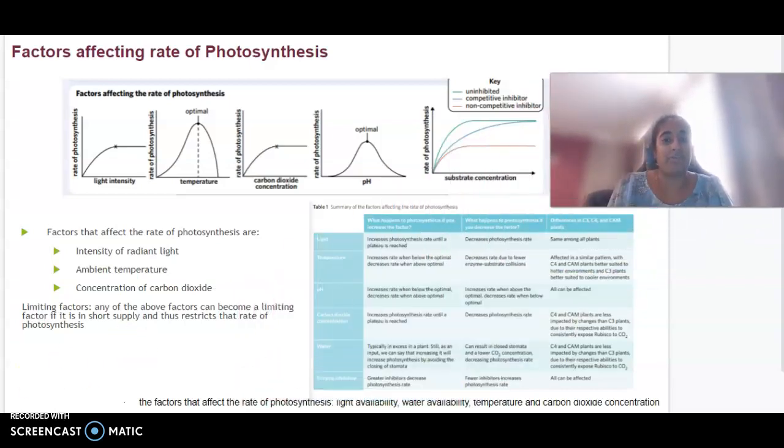Factors that can affect the rate of photosynthesis include light intensity—increasing light increases the rate until a plateau is reached. Temperature increases the rate when below the optimal, but after the optimal the rate declines. With pH, it increases below the optimal and decreases above the optimal. Carbon dioxide concentration increases until a plateau is reached. Water, typically in excess in plants, is still an input, and increasing it will increase photosynthesis. Enzyme inhibition: greater inhibitors decrease the rate of photosynthesis.